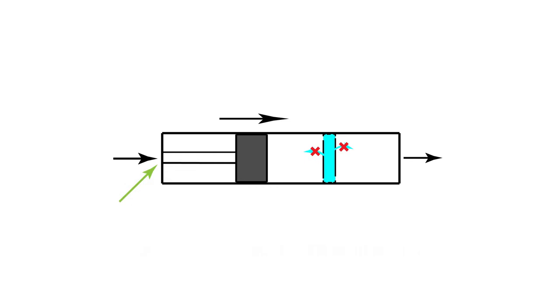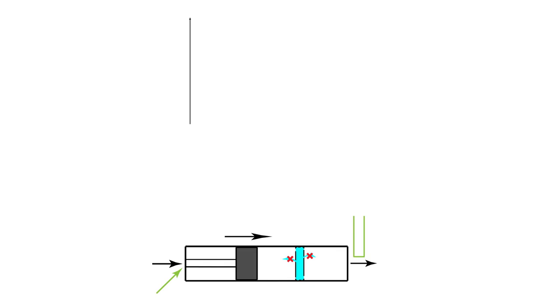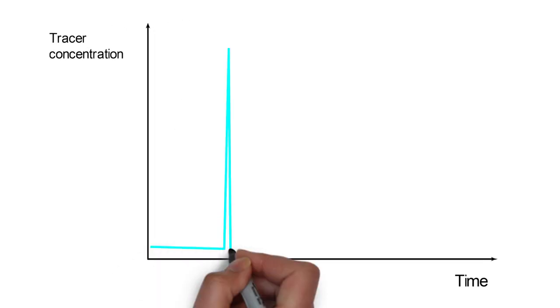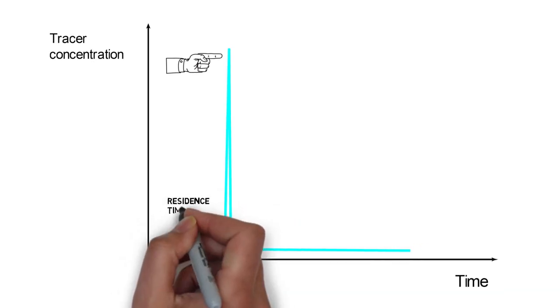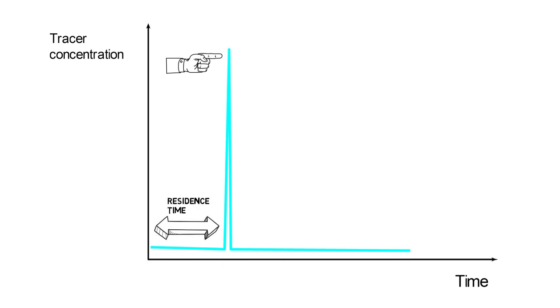Let's imagine the injection of a non-reactive tracer at the inlet of the reactor in the form of a pulse input, which means that the amount of tracer is injected instantaneously. If a probe is placed at the outlet of the reactor, we will be able to follow tracer concentration at the outlet as a function of time. If the reactor is a perfect plug flow reactor, the exit signal will have this shape. We can see the pulse input corresponding to the injection of the tracer, which is just shifted in time. All of the molecules have the same residence time, which is the time measured between the injection of the tracer and the peak observed at the exit.